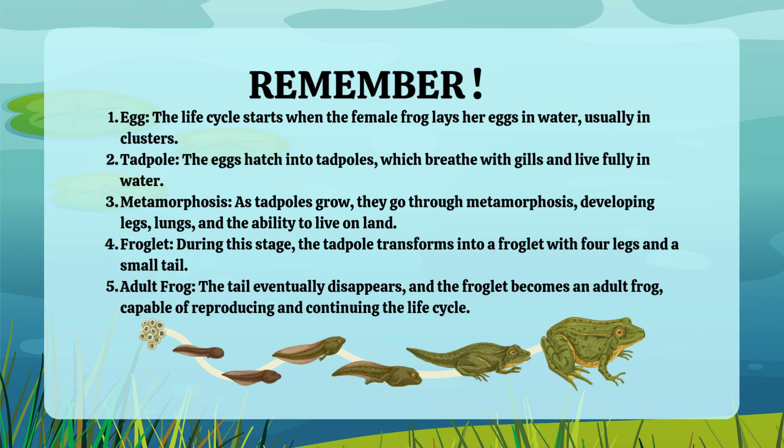The tadpole transforms into a froglet with four legs and a small tail. Finally, the tail disappears and the froglet becomes an adult frog, capable of reproducing and continuing the life cycle. Thank you for joining me on this exploration of the life cycle of a frog. Do you have any questions?